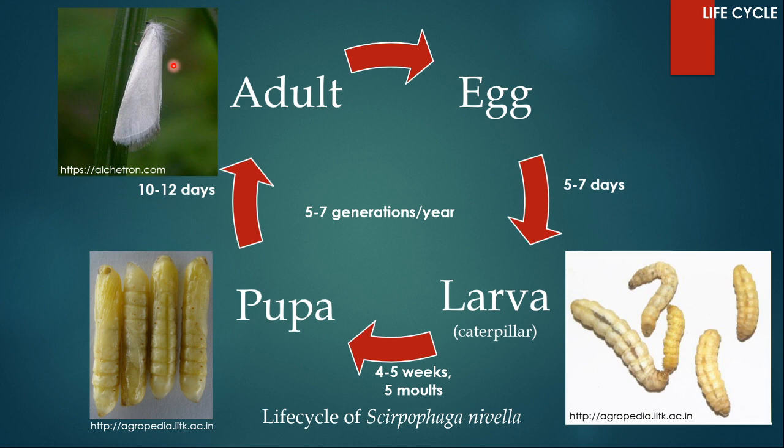Here is a picture of an adult. The male and female mate and the female lays eggs. The eggs take five to seven days to hatch, and the larvae will go through five moltings over four to five weeks, then pupate. The pupa will emerge as an adult in 10 to 12 days. There can be five to seven generations per year.